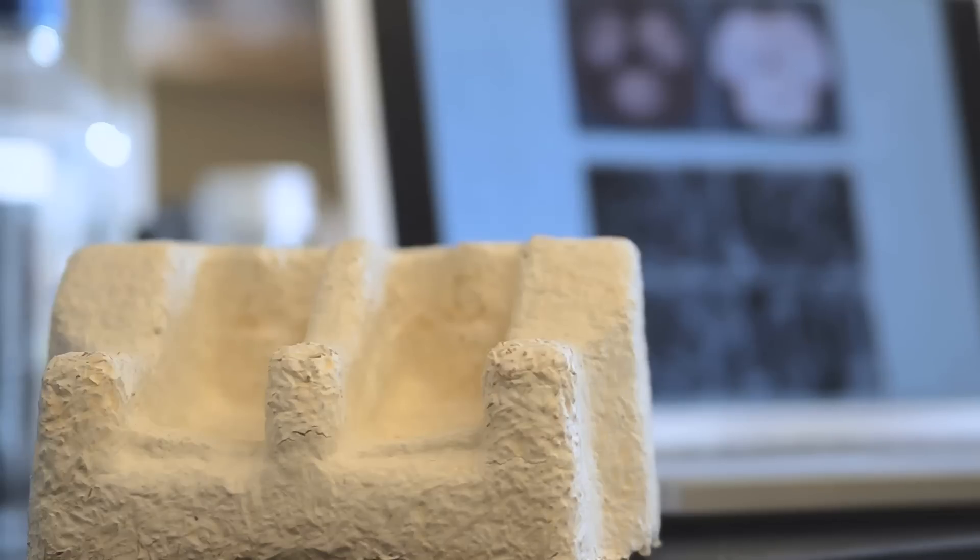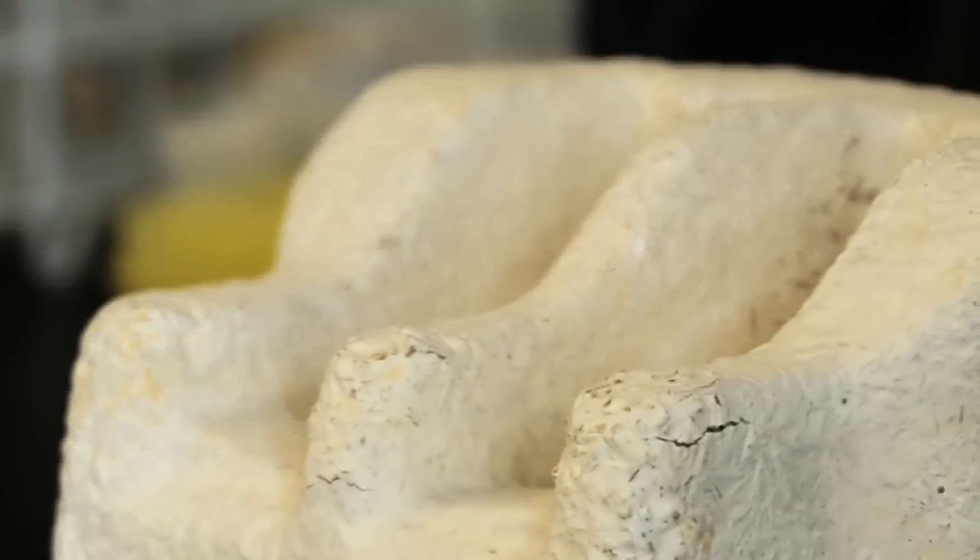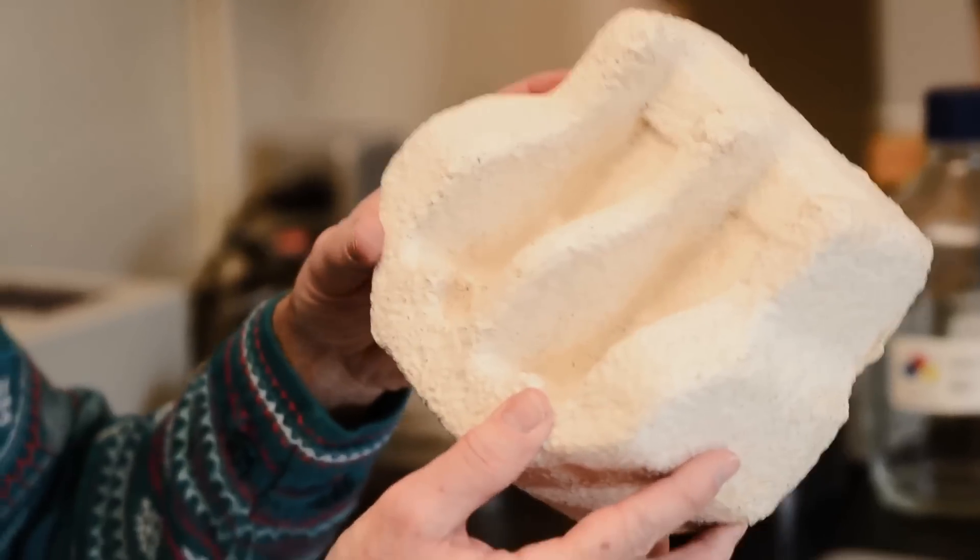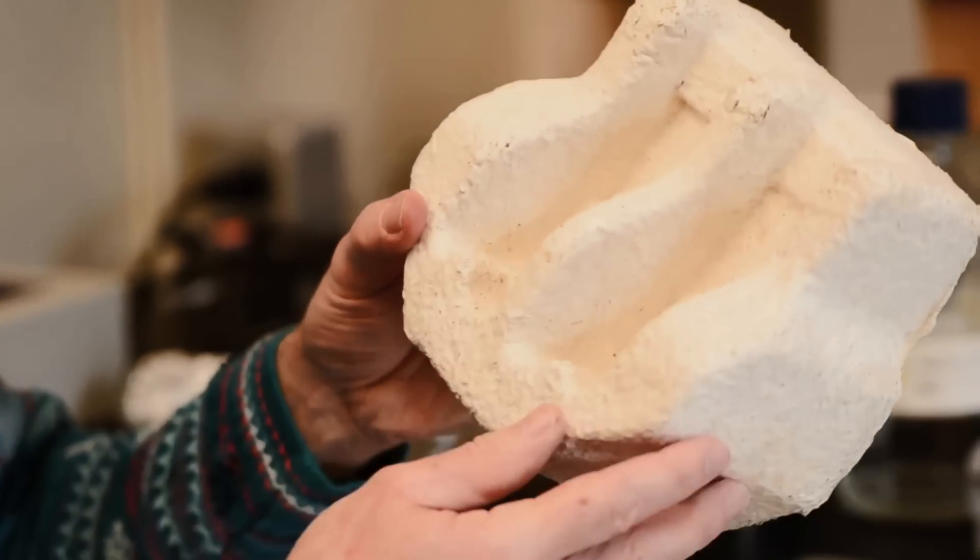Specifically what they do is use the fungi to make packaging and other types of material that's presently more commonly made out of styrofoam and other non-degradable materials. Instead they use agricultural waste that's locally obtained, and they inoculate or add the fungus to this waste, and what the fungus does is act as a biological glue.